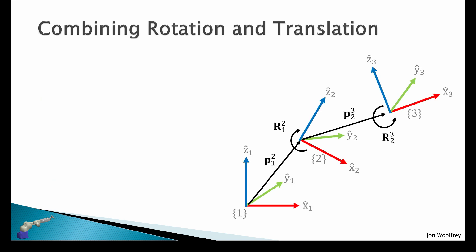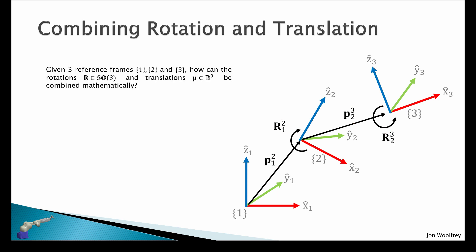So we can combine rotation and translation. Here we have three different reference frames, each with the translation vector and the rotation matrix between each. The question is, given these three reference frames one, two, and three, how can we combine the rotations — that is R in the special orthogonal group, which is a three by three matrix — and the translation P, which is a three by one vector? How can we combine them mathematically?